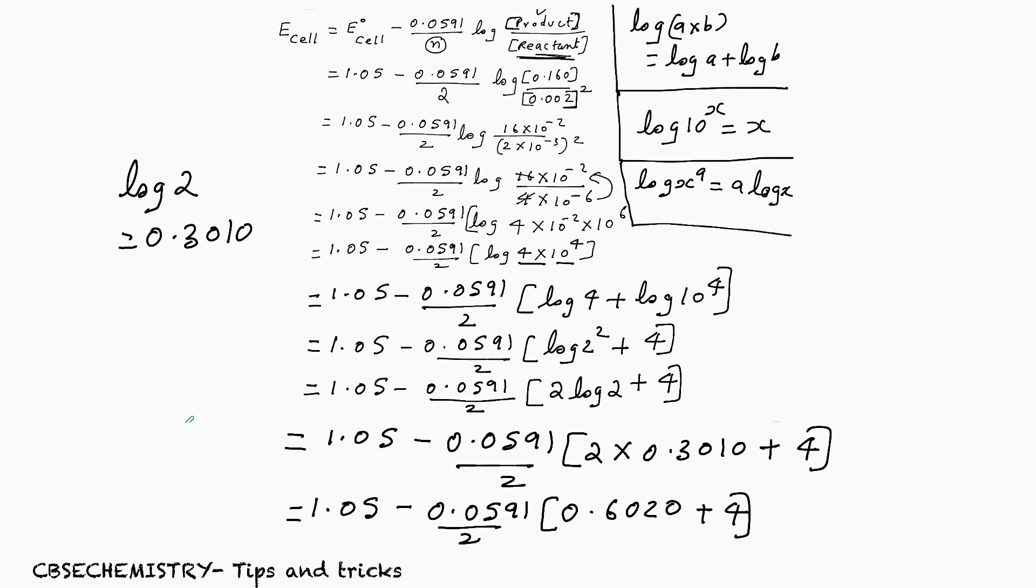Moving to the last step. 1.05 minus 0.0591 by 2, then 2 × 0.3010 is 0.6020 plus 4. Now, on calculating this, it is a case of pure multiplication. You can do this part first, then only subtract from 1.05. Then you will be getting 0.9141 volt.